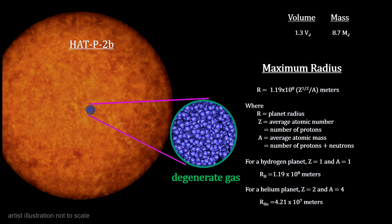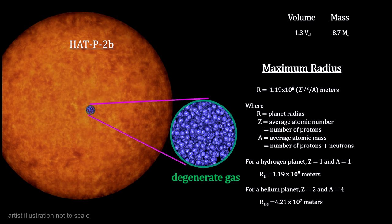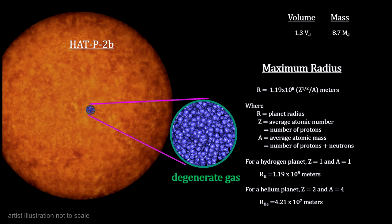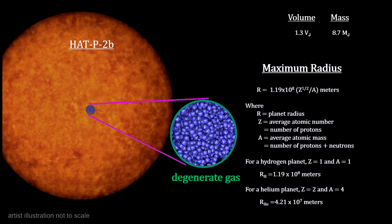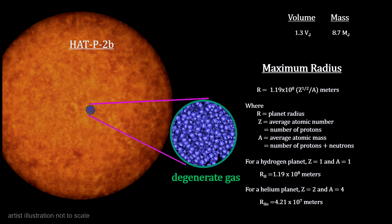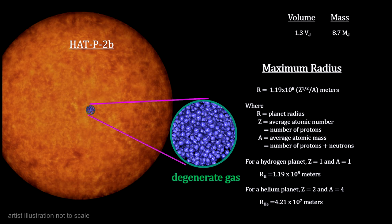HAT-P-2b is one of the most massive planets known so far. It has six times the mass of WASP-12b, but it's 30% smaller.